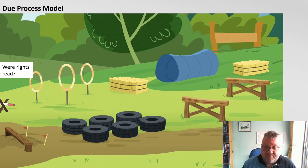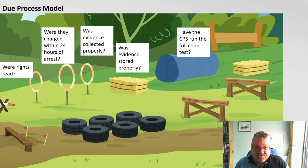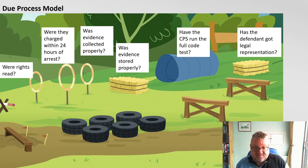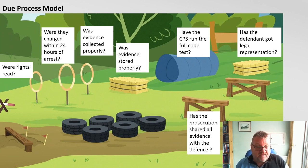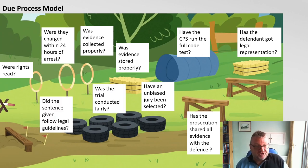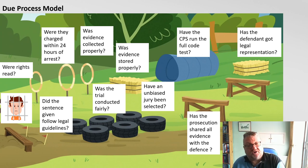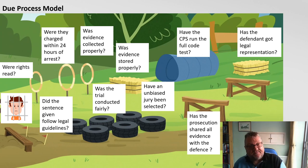Every step in the due process obstacle course is a barrier, a hoop that must be jumped through. On arrest: did the defendant have their rights read to them — were they Miranda'd? Were they charged within 24 hours of arrest? Was the evidence collected and stored properly? Have the CPS run the full code test if we're in the UK? Has the defendant got appropriate legal representation? Has the prosecution shared all evidence with the defence? Has an unbiased jury been selected? Was the trial conducted fairly? Did the sentence follow legal guidelines? If all those hoops have been cleared and we still have a guilty verdict, the person goes to prison — that is what legal guilt means.